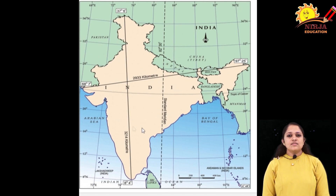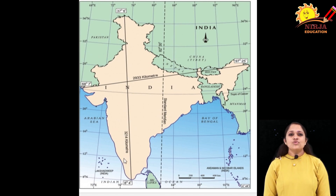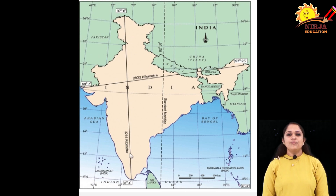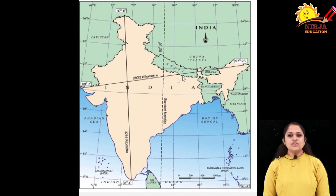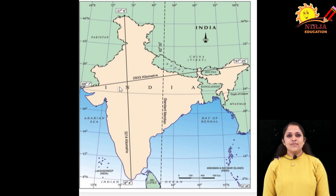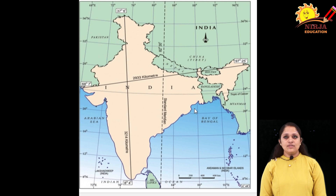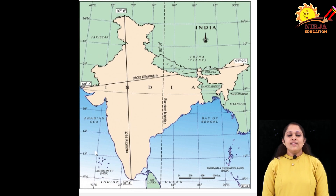The country is vast in size, measuring about 3,214 kilometers from north to south, and 2,933 kilometers from west to east. The coastline is 7,516.6 kilometers, encircling the mainland along with the Lakshadweep Islands and Andaman and Nicobar Islands.